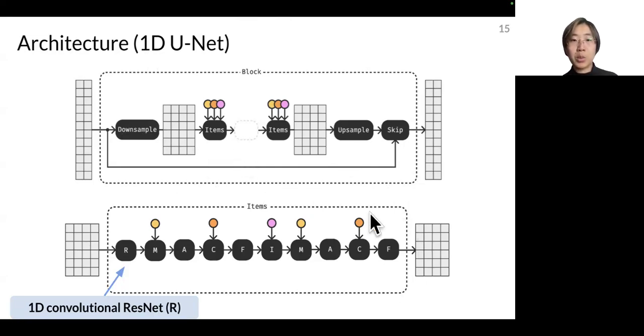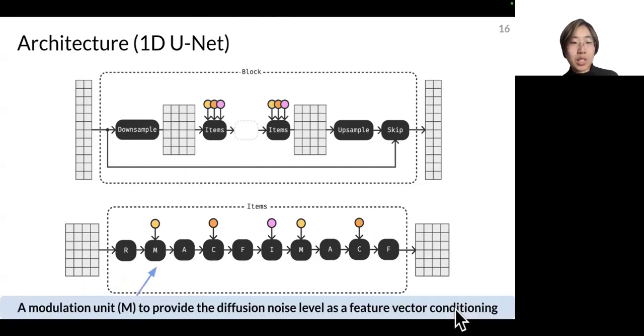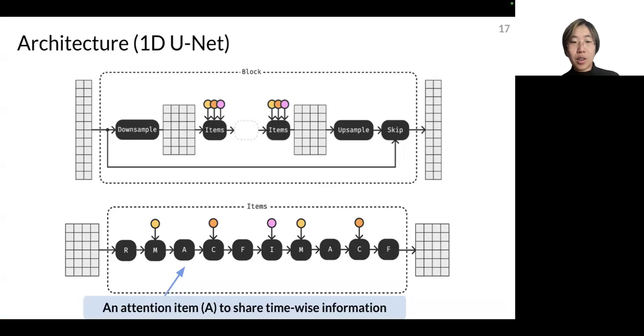So zooming into the component within each item, we basically designed the following pipeline. Given the latent embedding, we first let it go through a 1D convolutional ResNet R, then followed by an M unit modulation unit to provide the diffusion noise level as a feature vector conditioning, followed by an attention item A to share time-wise information, a cross-attention item C to condition on an external text embedding, and an injection item I to inject external channels as conditioning.